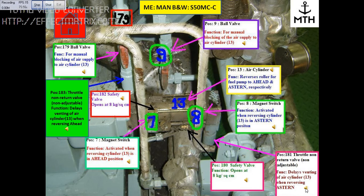This block is position number 181, which is a throttle non-return valve, which is non-adjustable. The function of this valve is to delay venting of air cylinder number 13 when reversing to stern.